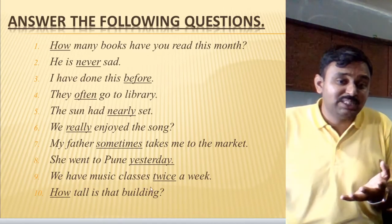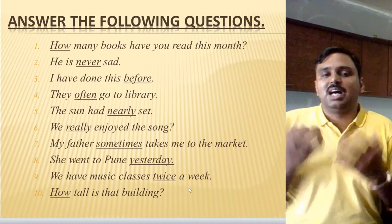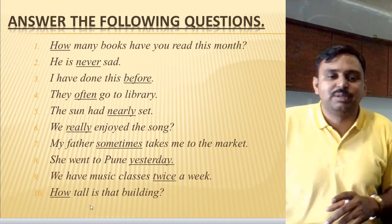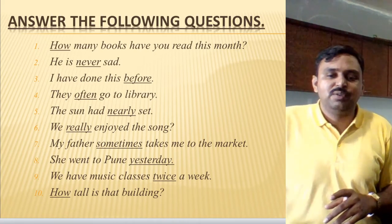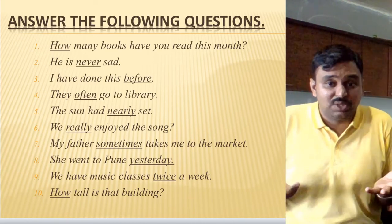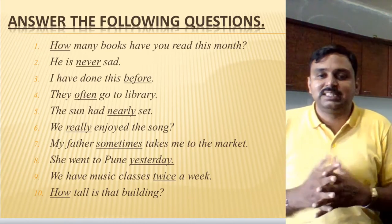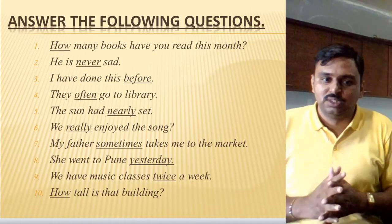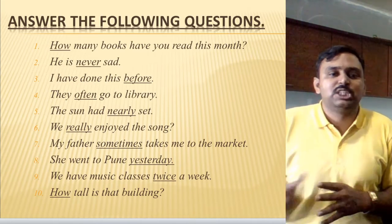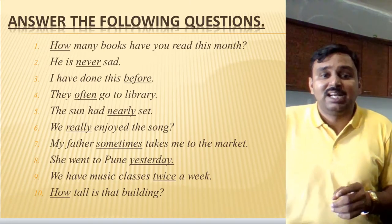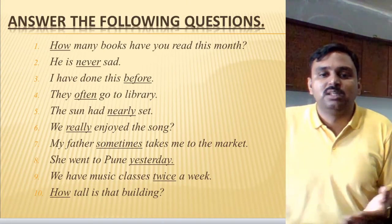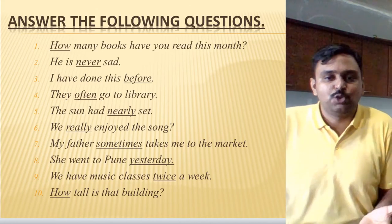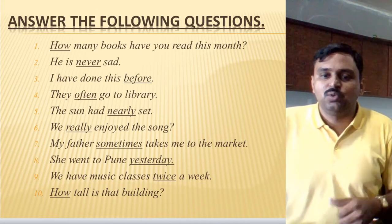Example nine: 'We have music classes twice a week.' How many times? Twice in a week. So 'twice' is an adverb of frequency. Example ten: 'How tall is that building?' It's a question, and whenever there is a question, it is an interrogative adverb. Remember these key points and practice well with more examples so that it will be easy for you to get good marks in the examination. Thank you and best of luck!